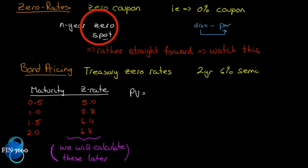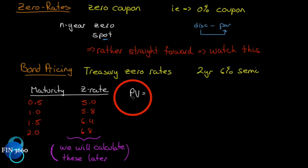We'll figure that out later. Right now let's revisit bond pricing, but this time instead of using a fixed market rate of return — like discounting at nine percent for five years — we're going to see the more correct way to discount the cash flows on a bond. By the way, if you're going to do the CFA, you need to know how to do this.